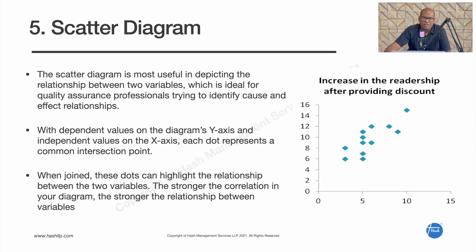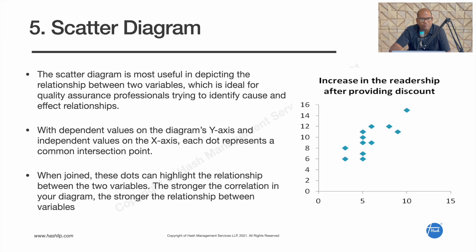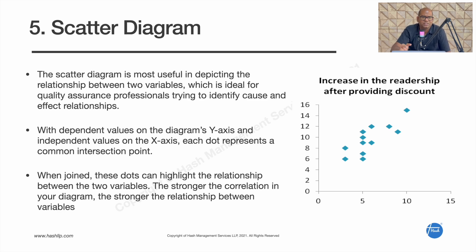The fifth tool is the scatter diagram, useful for depicting the relationship between two variables. For example, if you change temperature by five degrees, is there a change in the process result? There is a correlation between two variables, and the scatter diagram helps you identify it graphically, with X as one parameter and Y as another. In the example shown, increasing a newspaper discount percentage shows a positive correlation with increased subscription numbers — more discount, more sales — revealing a relationship between the two variables.